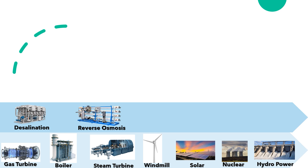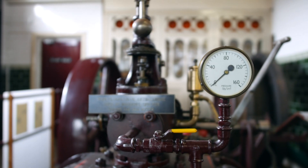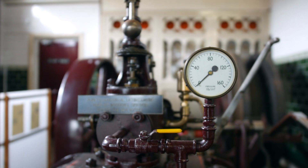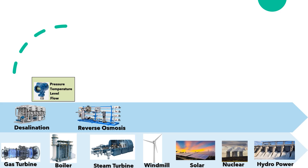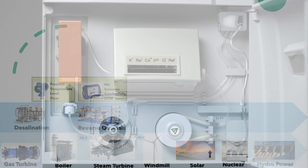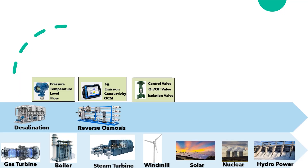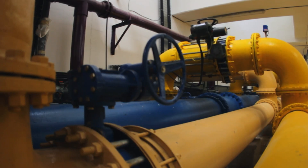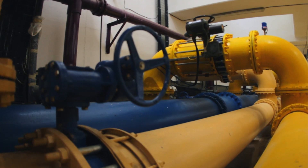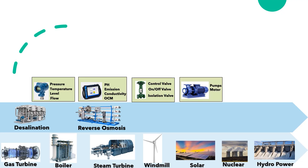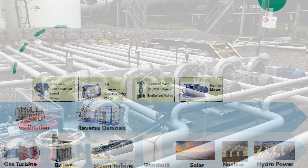All these major assets need monitoring of parameters and control of the process. We have pressure, temperature, level, and flow transmitters connected to process lines. We also have analyzers like pH, emission monitoring, conductivity, and oil content monitoring to check quality. The control of the process is done by regulating valves, and respective pumps and motors are also controlled to start and stop as per process requirements.